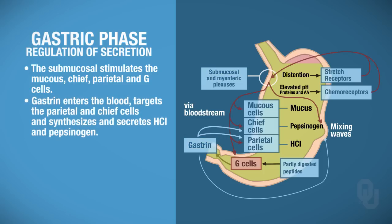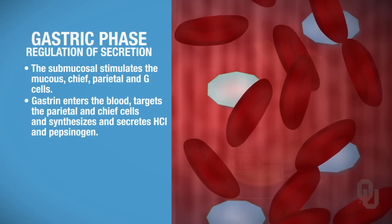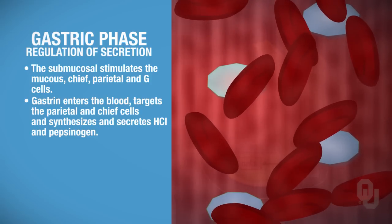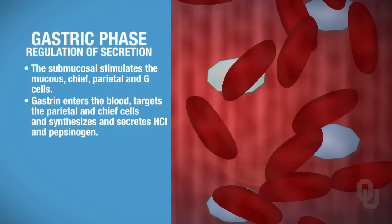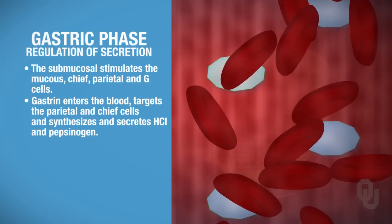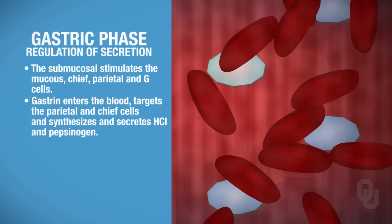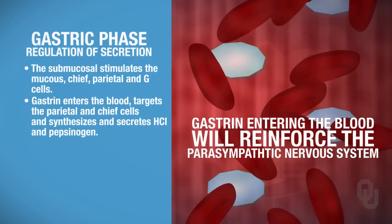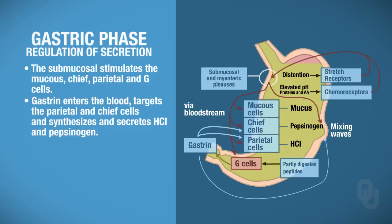Just like in the cephalic phase, gastrin can go into the bloodstream. Once it goes into the bloodstream, it will target those parietal cells and those chief cells, and you will also get synthesis and secretion of pepsinogen and HCl that way. So here you have reinforcement of the parasympathetic nervous system once again. The G cells aren't just stimulated by the submucosal plexus — they're also stimulated by partly digested peptides, which themselves will stimulate the G cells to synthesize and secrete gastrin.